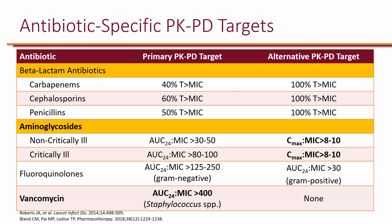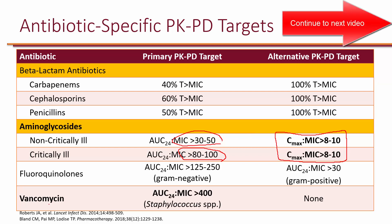Here are the PKPD targets for commonly used antibiotics. For aminoglycosides, the best PKPD target is AUC to MIC — specifically 30 to 50 for non-critically ill patients and 80 to 100 for critically ill patients. However, calculating AUC to MIC at bedside is not practical, so most clinicians use the peak to MIC ratio instead, targeting a peak 10 times the MIC. For this class, we will use peak to MIC for monitoring aminoglycosides.